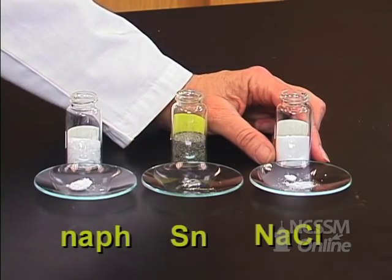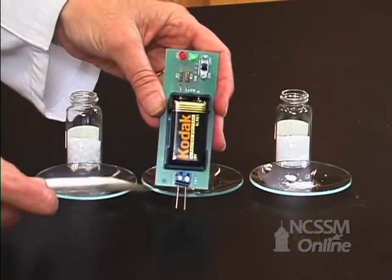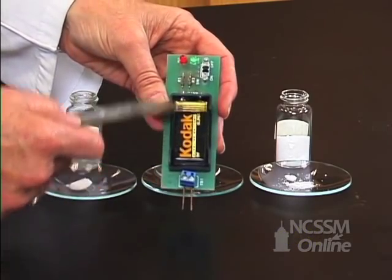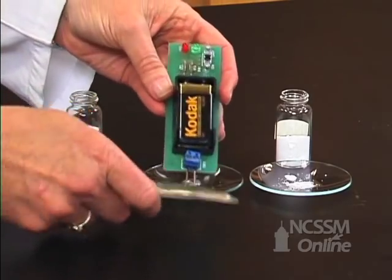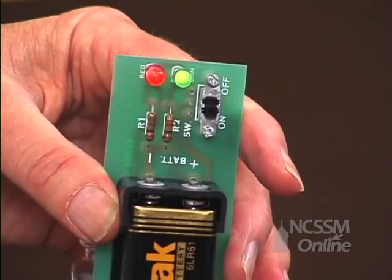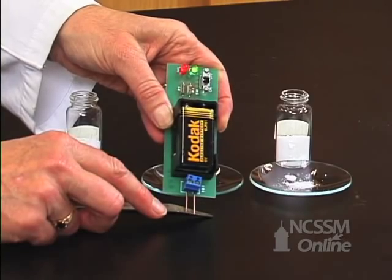First, let's look at the electrical conductivity of the solid. I have a conductivity device, and this is just a battery connected to LEDs. If the leads are crossed with a conductive material, then the lights will come on.